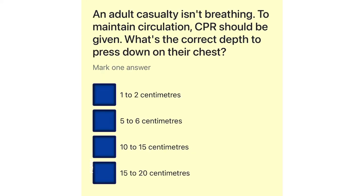An adult casualty isn't breathing. To maintain circulation, CPR should be given. What's the correct depth to press down on their chest? 1 to 2 cm. 5 to 6 cm. 10 to 15 cm. 15 to 20 cm.